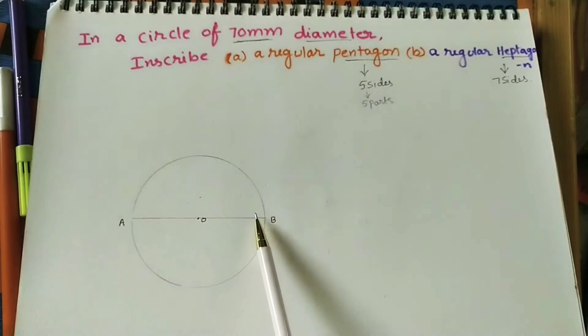First, we will do pentagon. In it, we have to divide 5 parts, this diameter. So, do one inclined line. On it, mark 11 centimeter into 5 parts.